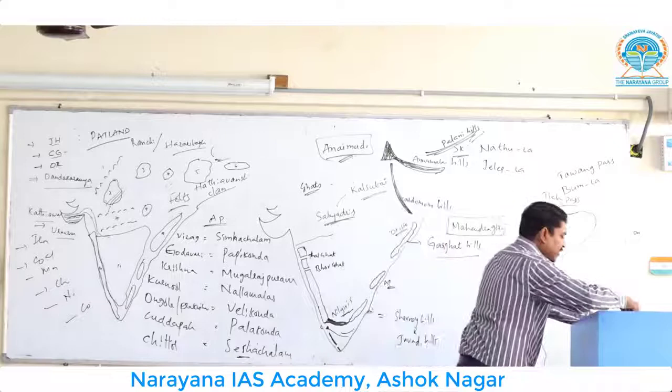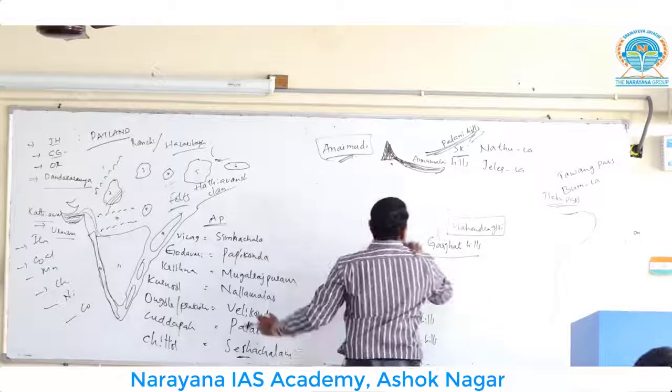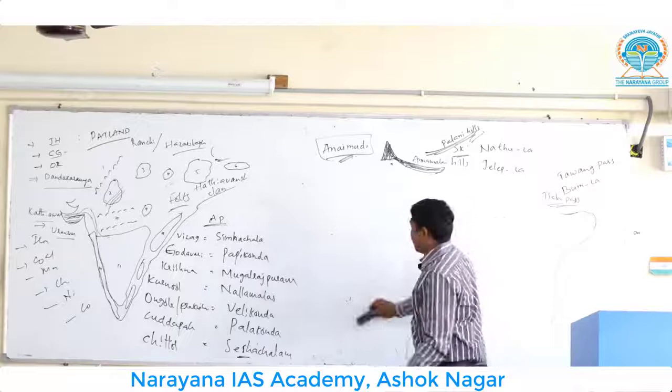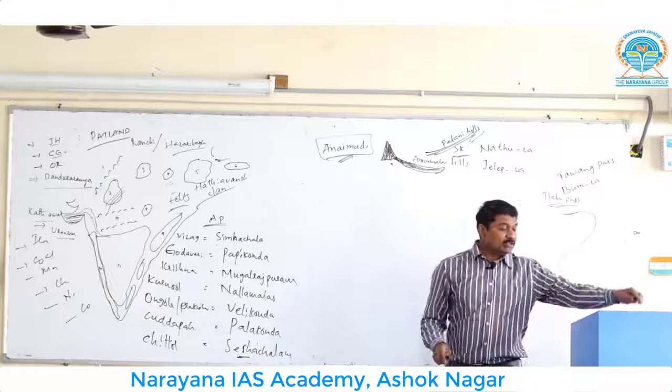The coastal plains are a very simple topic. There are different names given for the coastal plains in different states. We can find two types of coastal plains: one is called the west coastal plain and another one is called the east coastal plain.